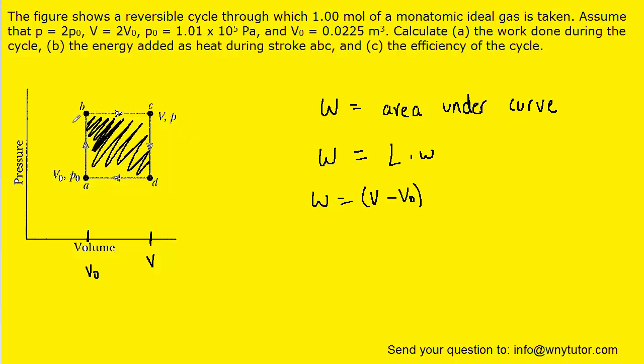And then we have the width of the rectangle, which would be this dimension. We have a pressure P0 and then a pressure of P, so the width becomes P minus P0. Now the question notes that V equals 2V0, so we can substitute that in. And P is given as 2P0, so we can make that substitution as well.